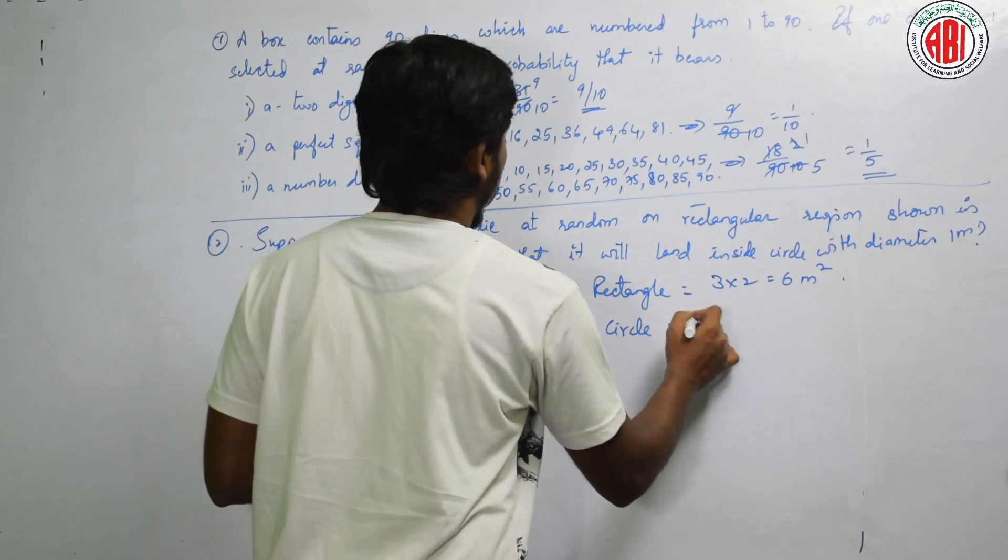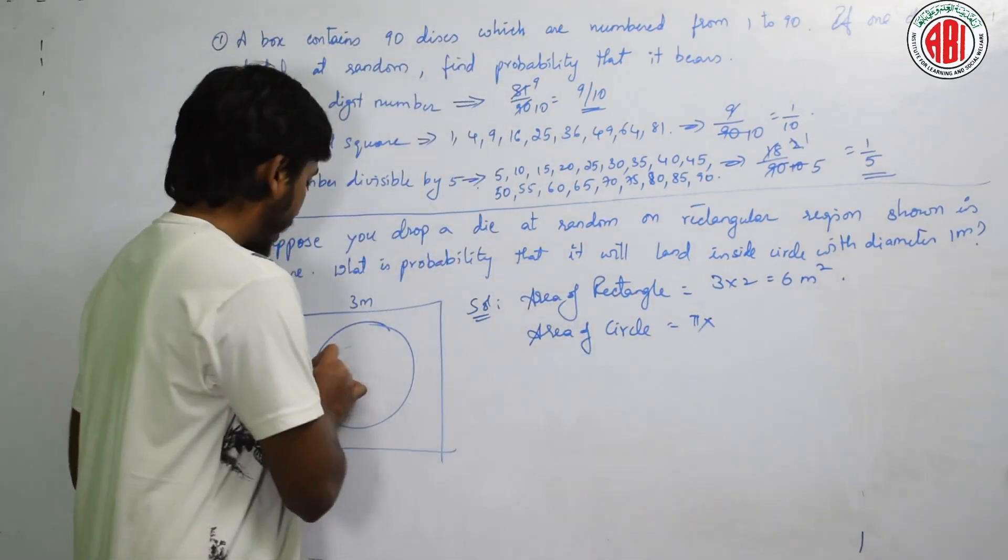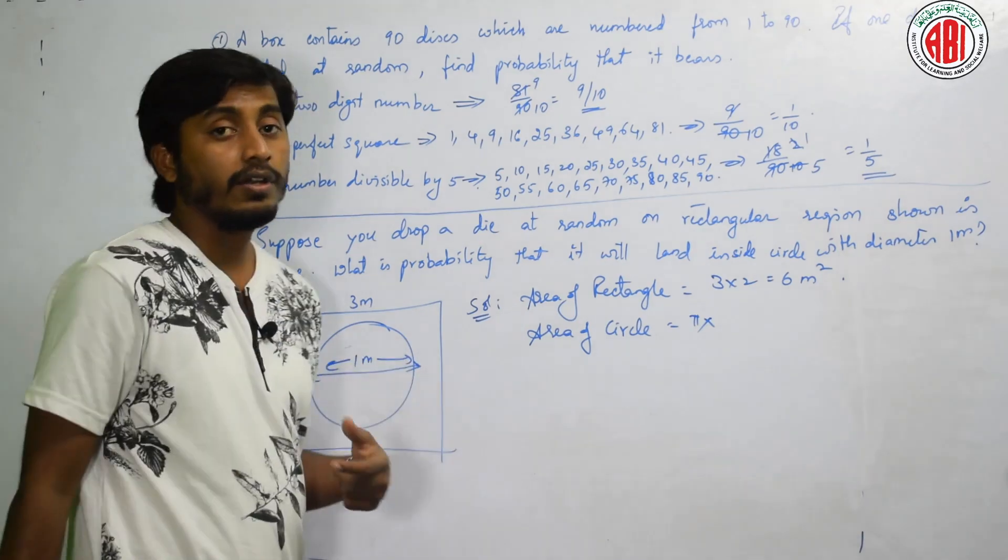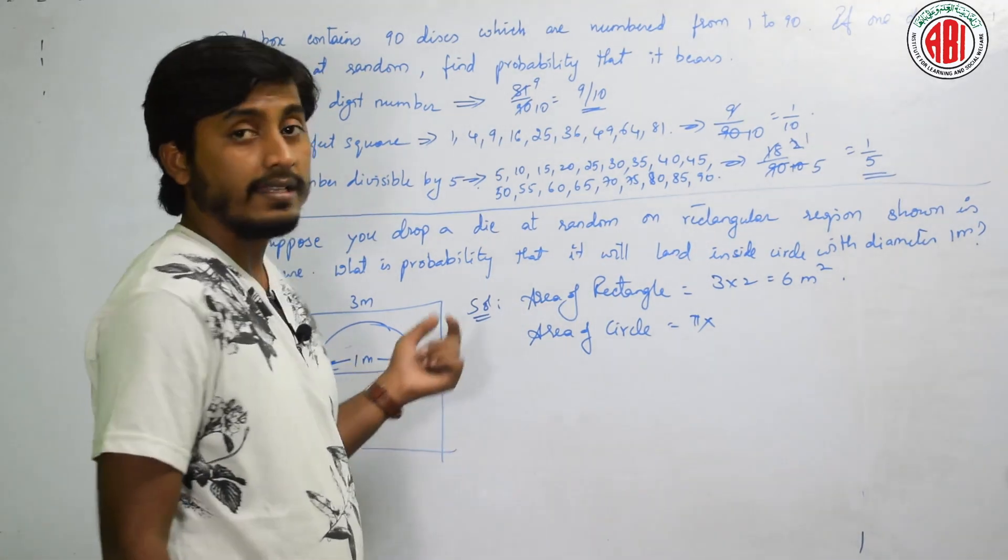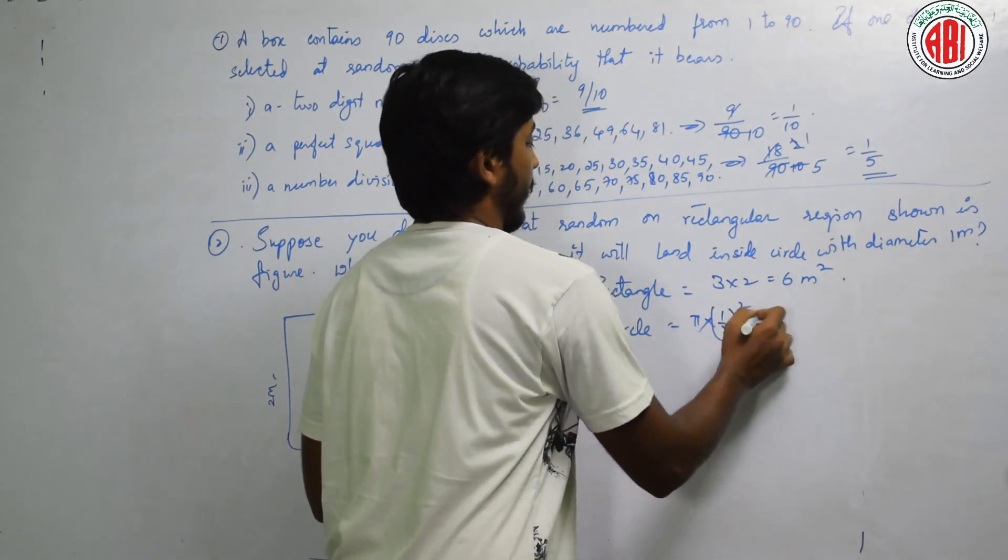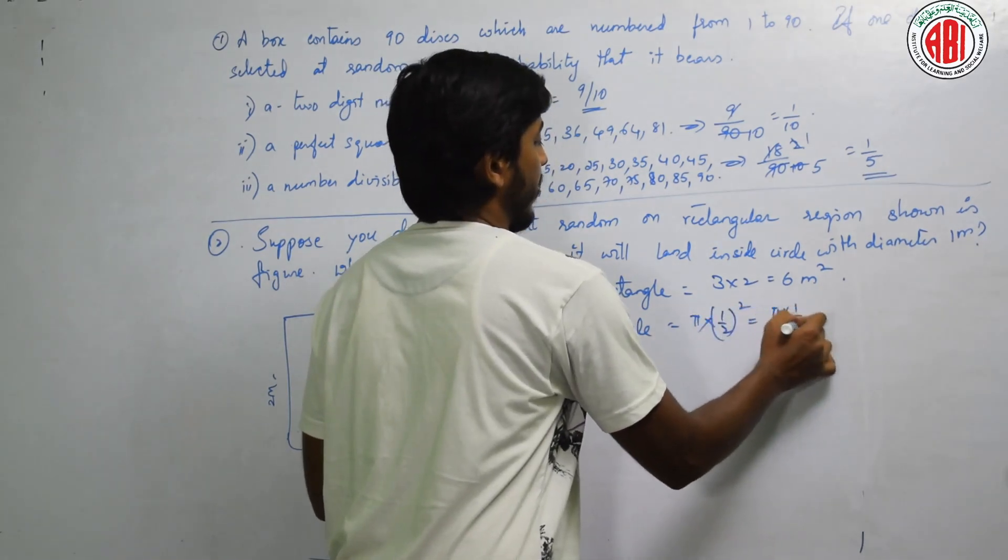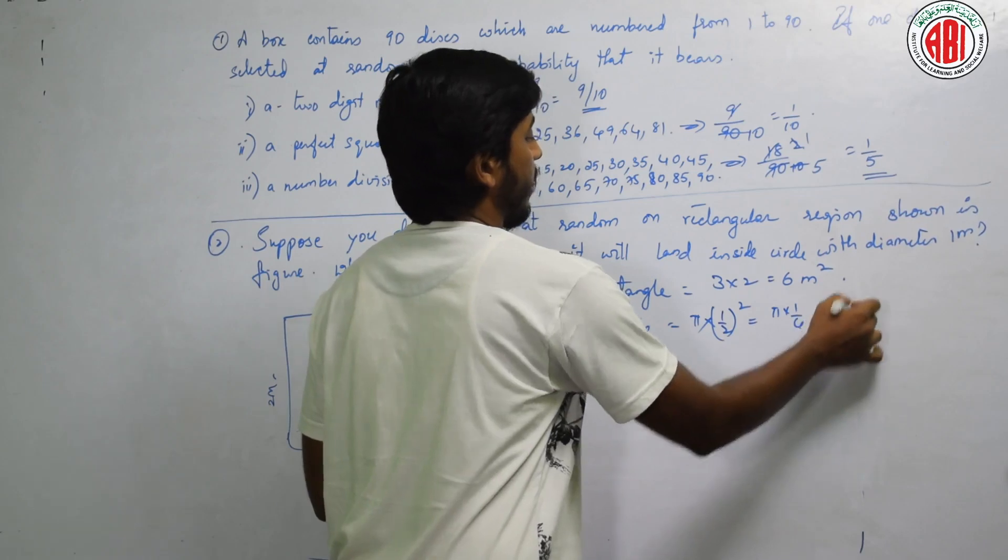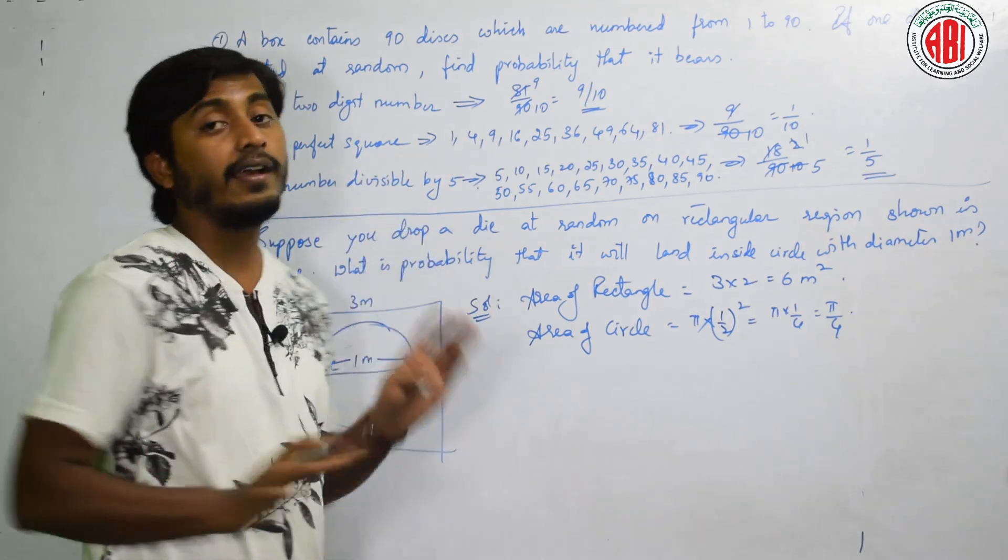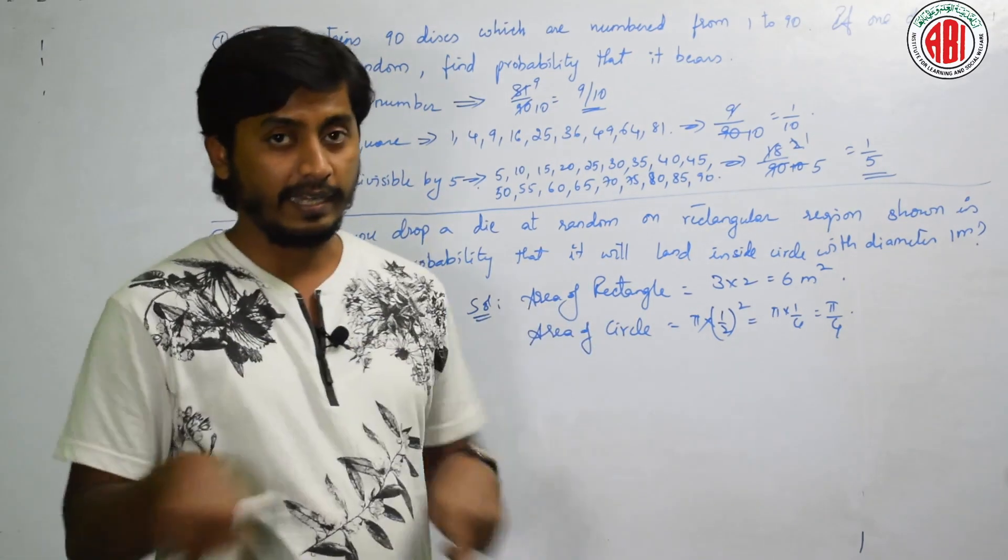Next, area of circle. Area of circle is pi r square. That is pi into r - diameter is given as 1 meter square. Radius is half. That is half square. That is pi into 1 by 4, that is pi by 4.